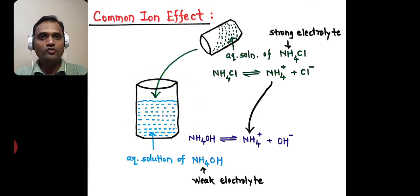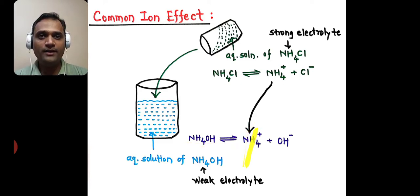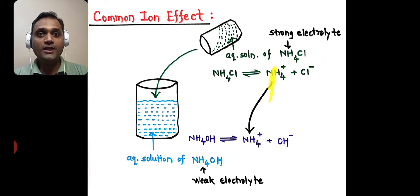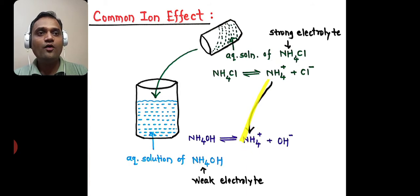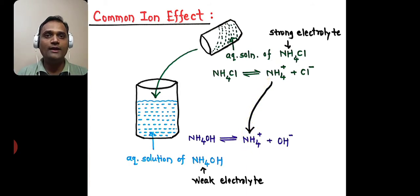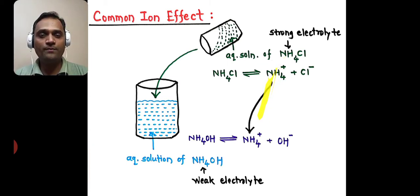What is observed? When ammonium hydroxide undergoes ionization, it forms NH4+ and OH−. When we add NH4Cl, it gives us NH4+ and Cl−. So that NH4+ from NH4OH and the NH4+ from NH4Cl — it is a common ion. Our strong electrolyte provides us a common ion, which is NH4+.